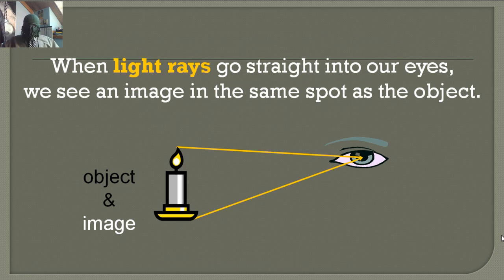When light rays go straight into our eyes, we see an image in the same spot as the object. The light rays go into the eye and we're seeing the image of that object right where that object is.